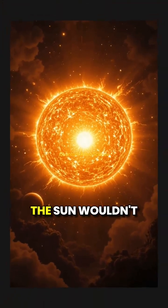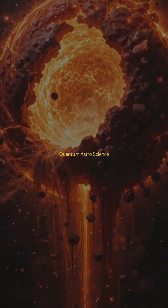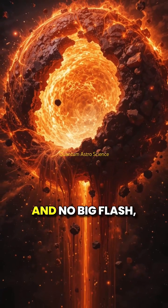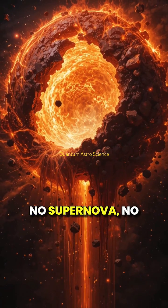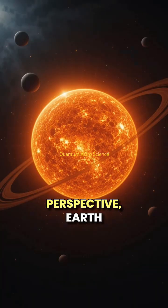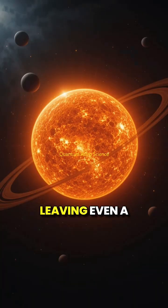And here's the shocking part: the sun wouldn't even notice. Its mass is so overwhelming that absorbing earth would be like throwing a pebble into the ocean—no big flash, no supernova, no ripple across the solar system. From a cosmic perspective, earth would vanish without leaving even a scar.